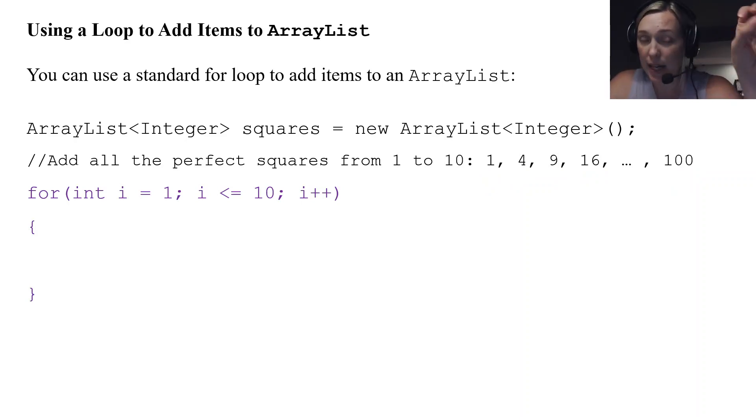So I'll start by using my standard for loop header where i is equal to 1. And it goes up to and including 10. And I just do squares.add i times i. So in this case, i isn't my index. i represents an element that I'm going to add to my ArrayList. So I'm adding i times i. Because i times i is a single parameter. And remember when I have a single parameter, I am adding that to the end of my ArrayList. So by the end of this loop, I'll have all the perfect squares added to the ArrayList.